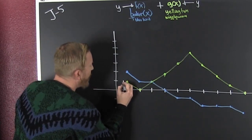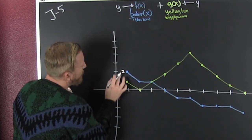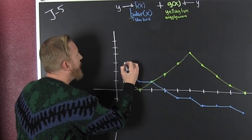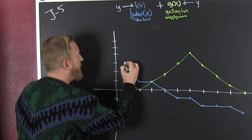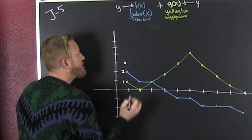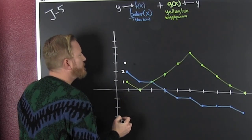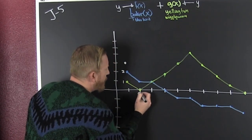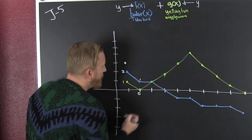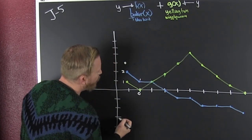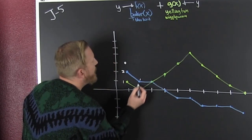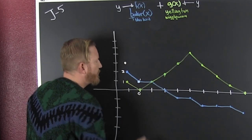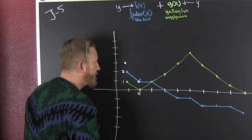So here I'm adding 1 and 2. 1 plus 2 is 3, and I put a dot there. Here, this is 0 and that's 1. 0 plus 1 is 1, and I put a dot right there.